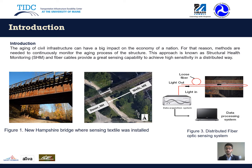Why do we want to develop a system for structural health monitoring? The aging of civil infrastructure can have a big impact on the economy of a nation. For that reason, methods are needed to continuously monitor the aging process of structures — this process is known as structural health monitoring. The current techniques being used nowadays rely on what are known as strain gauges; however, strain gauges only provide localized signals, which means if we want to know what's happening between two strain gauges, we will not have that information.